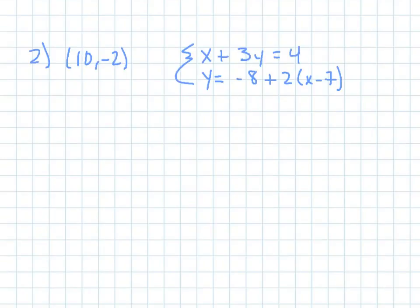Let's try the other one. Number 2 says 10 comma negative 2 for these two equations. So, I'm going to plug them in as well. So, let's plug in 10 for x, plus 3 times negative 2 for y, equals 4. And I'm plugging this into that first equation there.